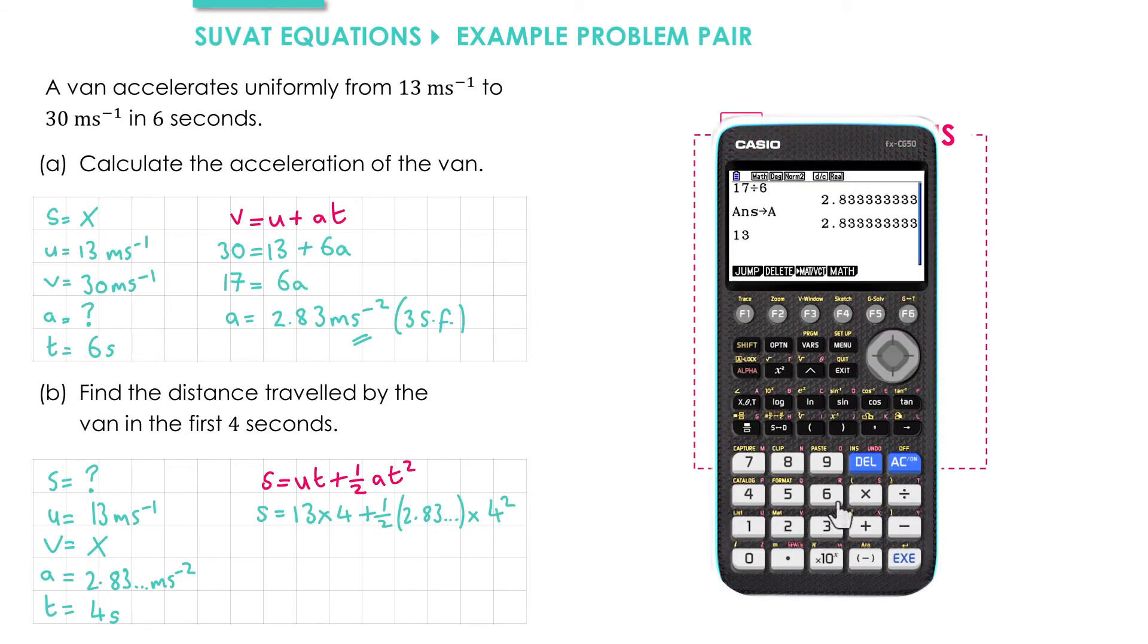Let's put that into our calculator. We've got 13 times 4 plus one half times A, which we stored in the calculator as A, so to access that we go alpha and then A, and then T squared, so 4 squared, which gives us 74.7 to three significant figures.